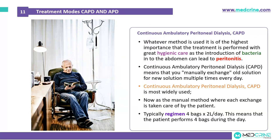There are two modes of treatment in peritoneal dialysis. The first is continuous ambulatory peritoneal dialysis or CAPD. Whatever method is used, it is of the highest importance that the treatment is performed with great hygienic care, as the introduction of bacteria into the abdomen can lead to what is known as peritonitis. In CAPD, the patient manually exchanges the old solution for a new solution multiple times a day. This is the most commonly used manual method. Typically, the regimen requires four bags of two liters per day, meaning the patient performs four exchanges during the day.